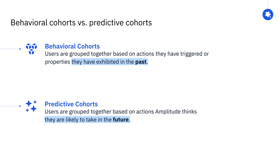As we've mentioned before, you can think of predictive cohorts as similar to behavioral cohorts, except that they're built by grouping users based on their likelihood of doing some future outcome that you specify. You can sync predictive cohorts to downstream destinations and use them in campaigns just like behavioral cohorts.